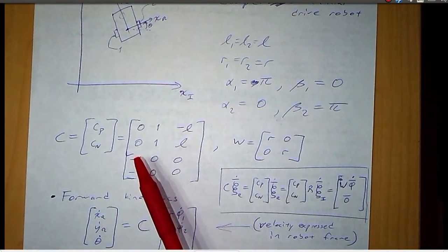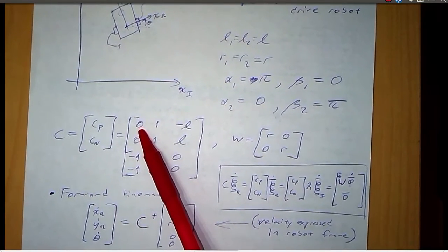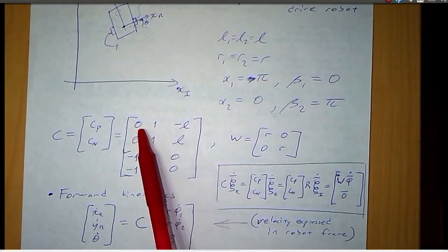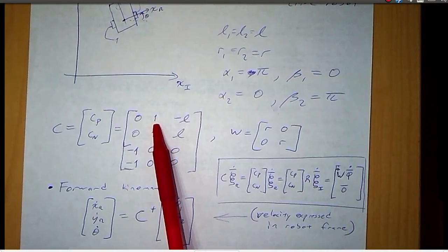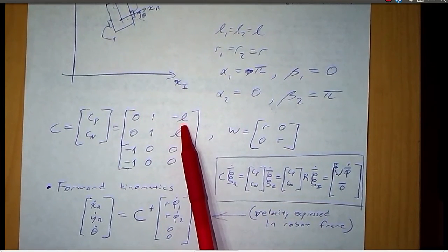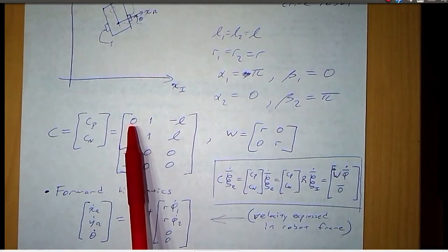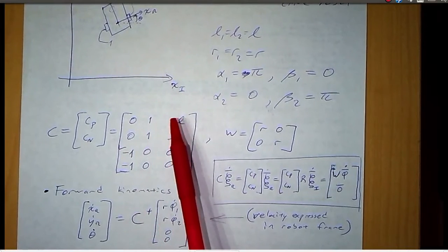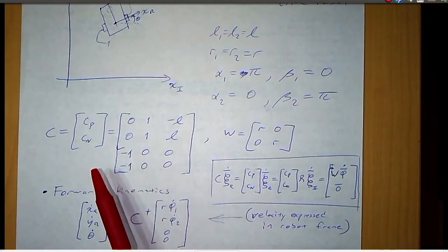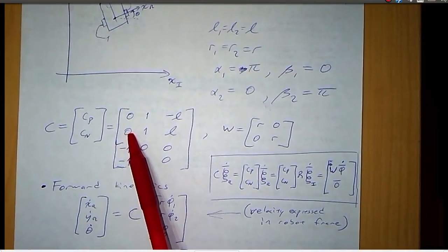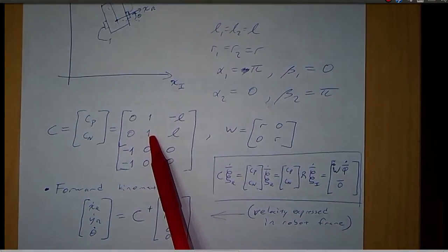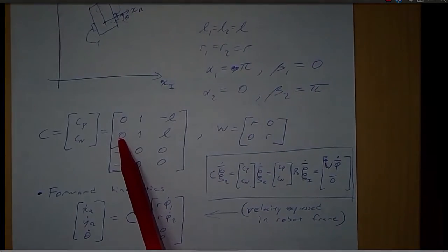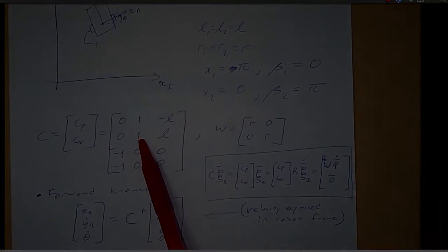From an earlier video, we know that the Cp terms are: sine(alpha + beta), negative cosine(alpha + beta), and negative L times cosine(beta). For wheel one, we use alpha one, beta one for each of those terms. On the second row for wheel two, we have sine(alpha two + beta two), negative cosine(alpha two + beta two), and L times cosine(beta two).